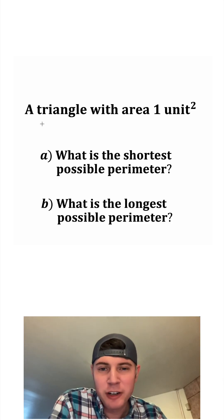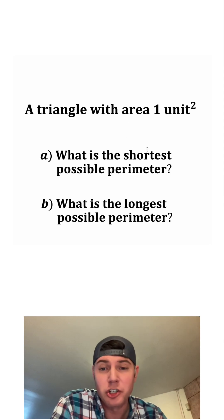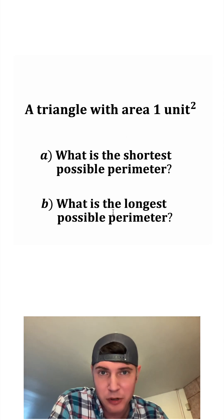Hey guys, I posted this the other day. It said there's a triangle with the area of one unit squared. For this particular triangle, what is the shortest possible perimeter and what is the longest possible perimeter?